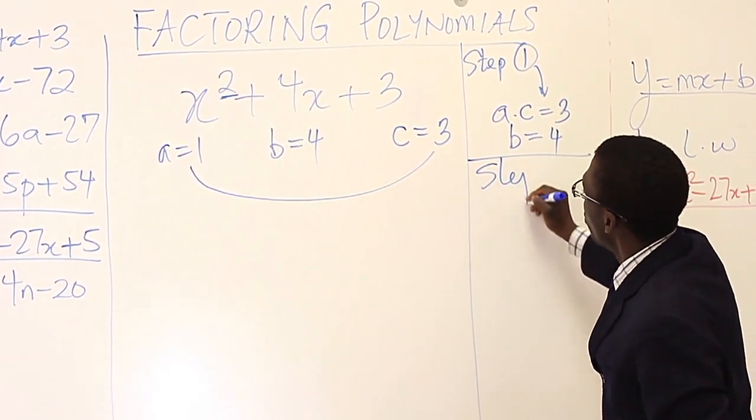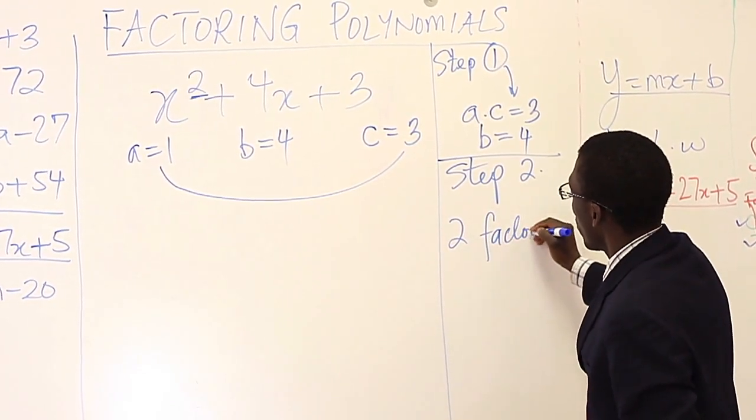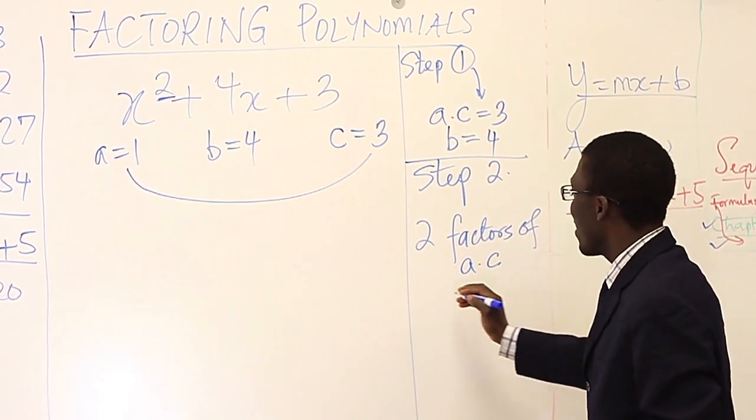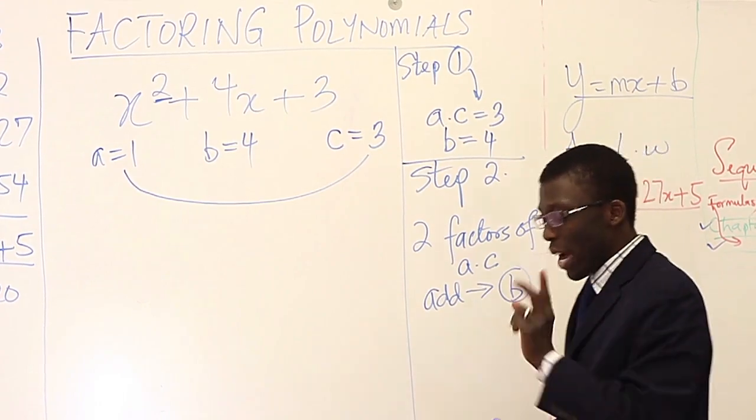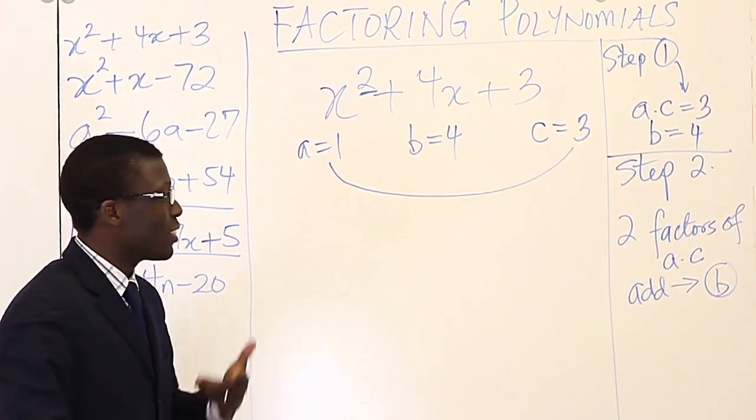And then step 2 is we're looking for two numbers. So two factors of ac, two factors of a times c that add to give b. So we need to find two numbers that multiply to give 3 and add to give 4.